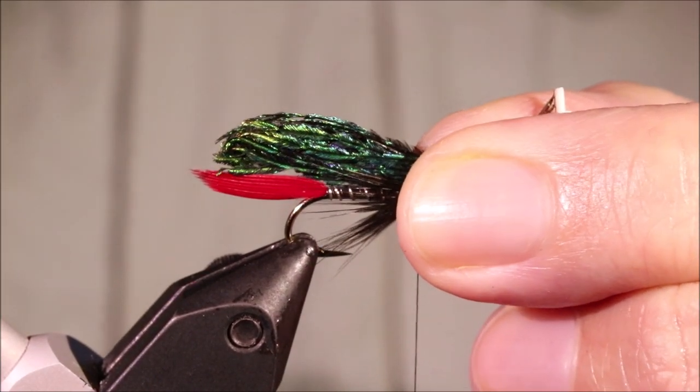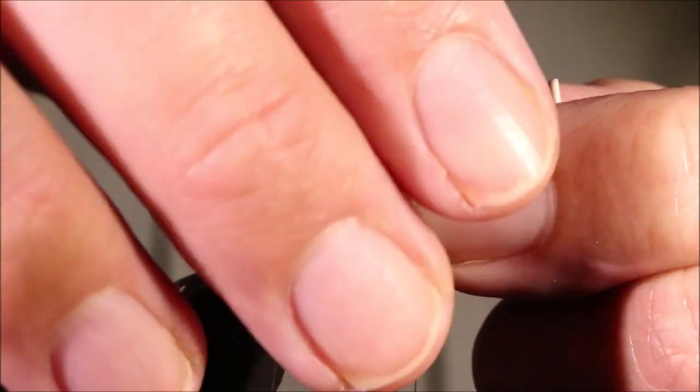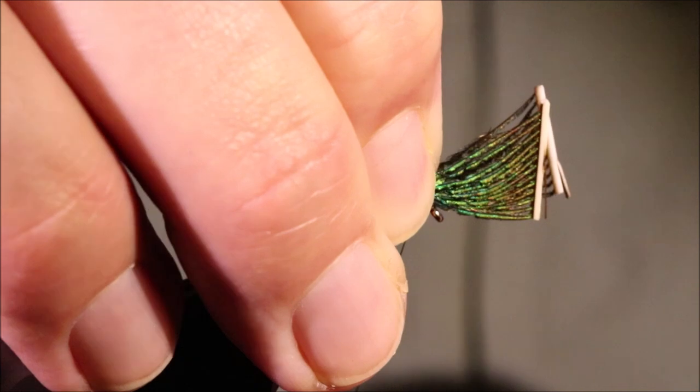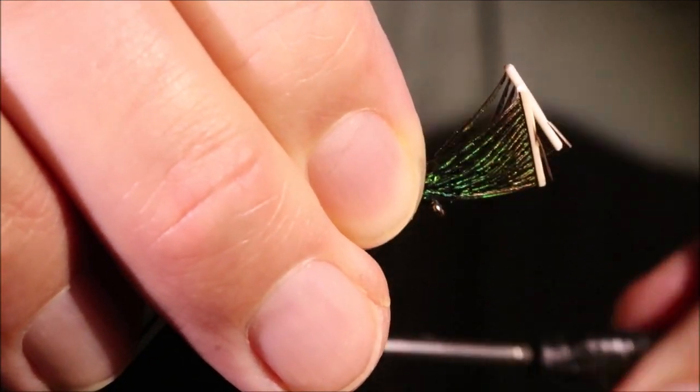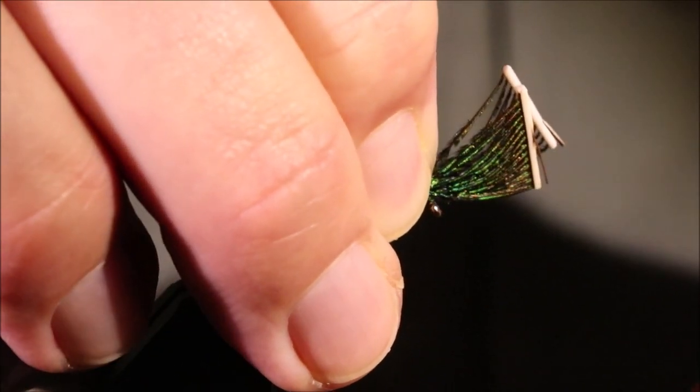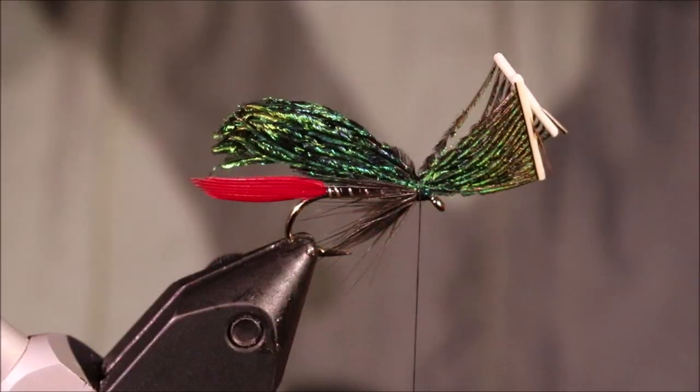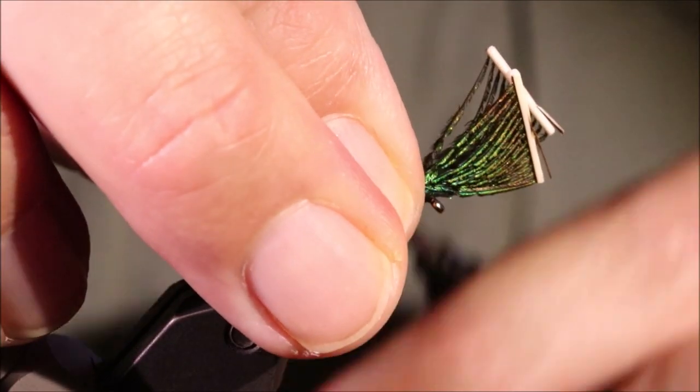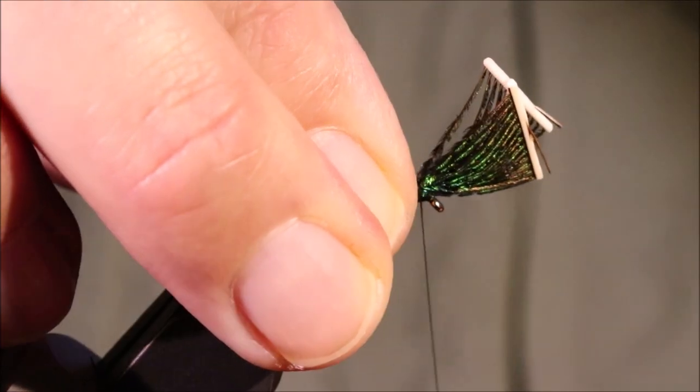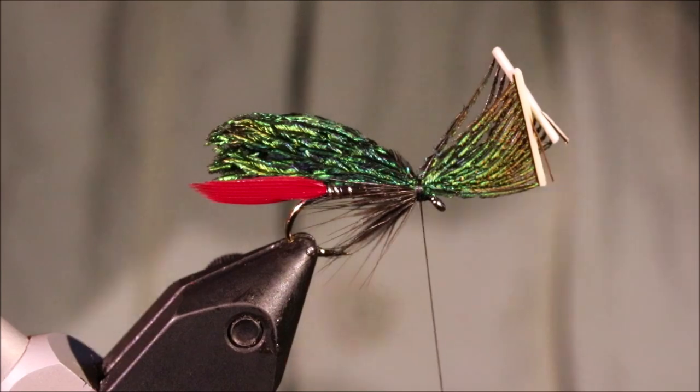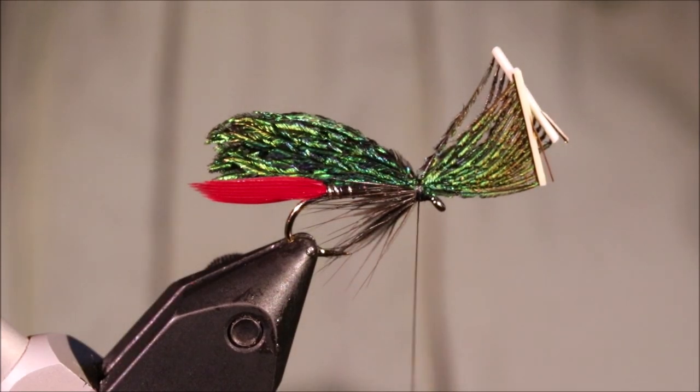But anyway, there you go. That's the length. I like it just short of the tail, but it's up to you. If you want it the same length or whatever, or a bit shorter still, do so. Just pinch and looping it in, two turns just to see. And I like the way that's sitting there, so I'll just take another couple of turns just to secure it. Get one last check before I cut.